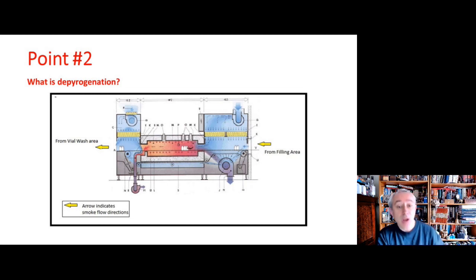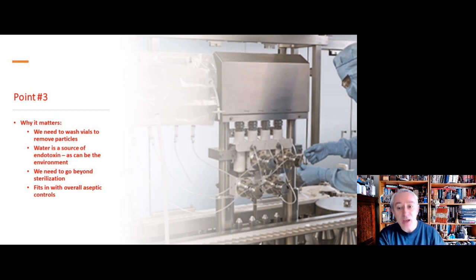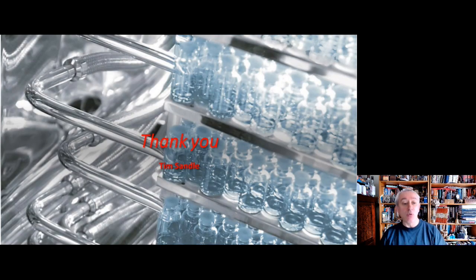That's point number two. Point number three is, well, why bother? Why does all this matter? We have to wash vials to get rid of particles, but then we end up with wet vials. The water, though it's well controlled, could be a source of endotoxin. You've got occasional handling and then the general environment where you get dust particles in particular, which can also have endotoxin on them. So we need to make sure that we are getting rid of the pyrogens - we are depyrogenating and sterilizing the vials as they go through the tunnel. We need to take this principle beyond sterilization, and this fits in with our overall aseptic controls. We want to have vials that, as we're filling them, we know the vials themselves are suitable for a product that is going to be injected into the patient.